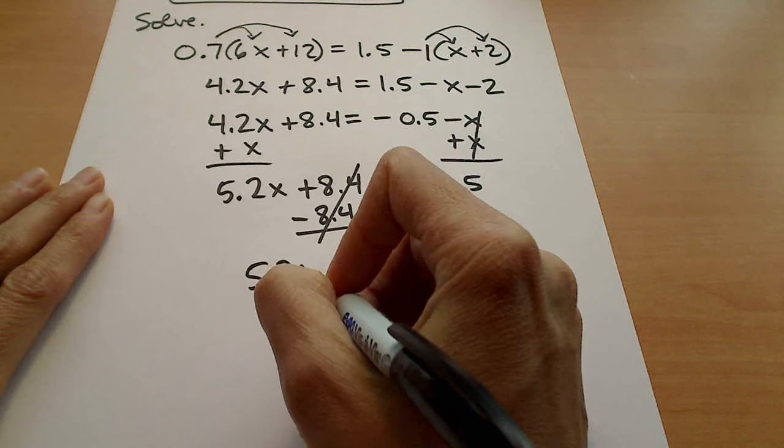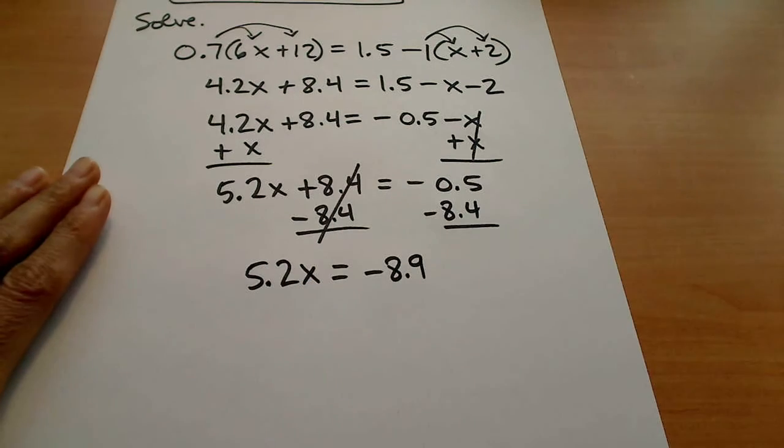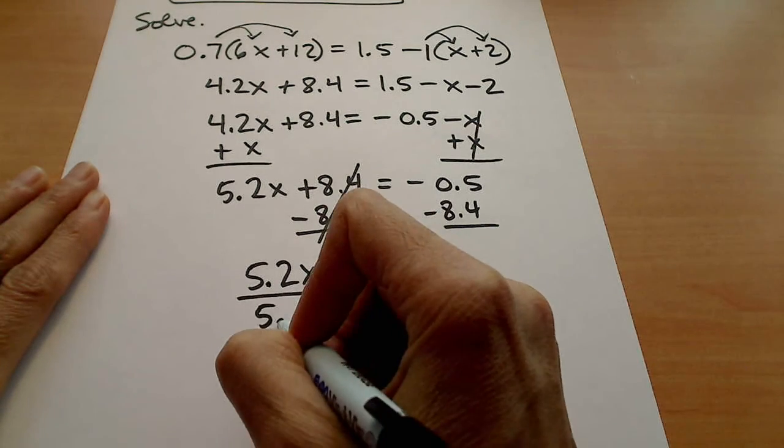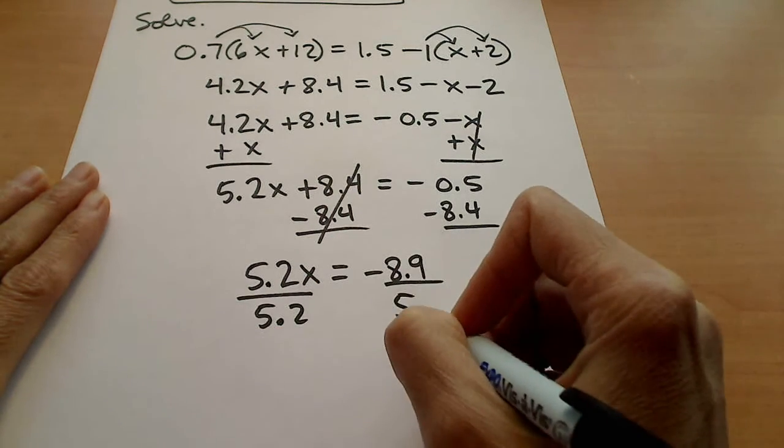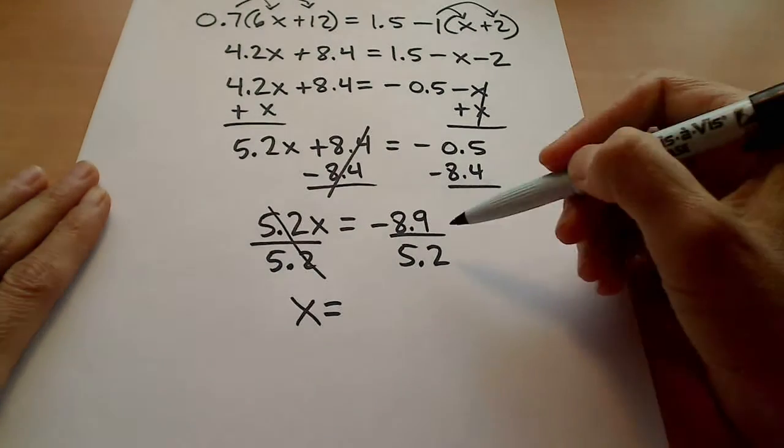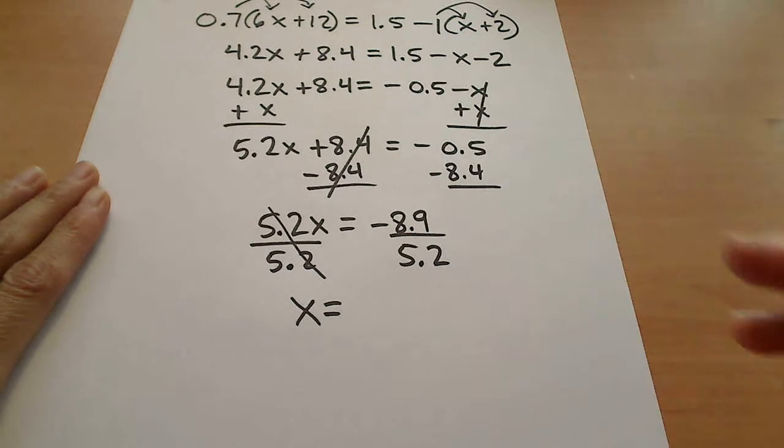So this is 5.2x equal to negative 8.9. At this point, and this is probably what the question is about on this problem, is how do we leave the answer here. So we're going to go ahead and divide by 5.2.